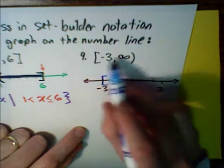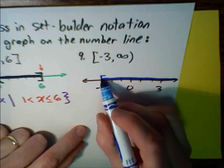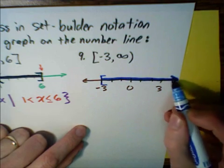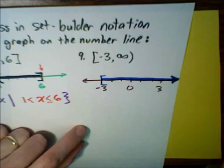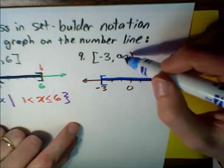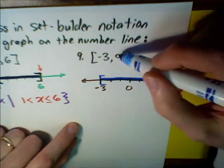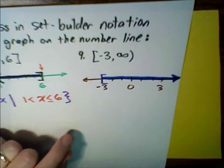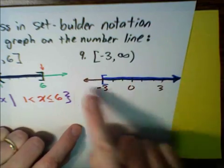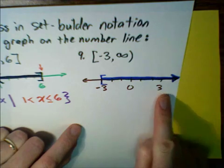We're going to want to shade everything to the right and we're going to have a nice heavy arrow at the end. There's a soft parenthesis at the infinity end, because you can't actually include positive infinity — infinity is not a number. So this is what the graph would look like on the number line.